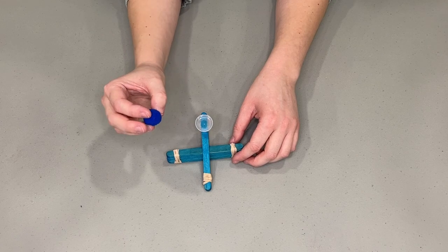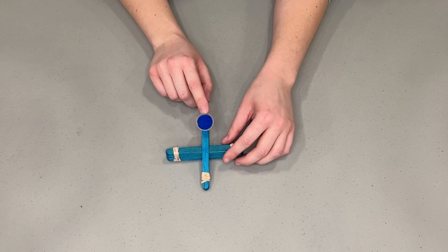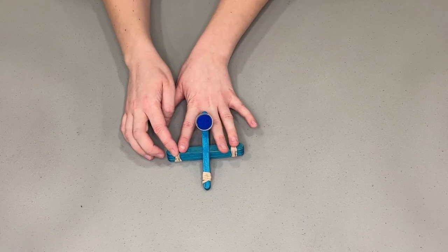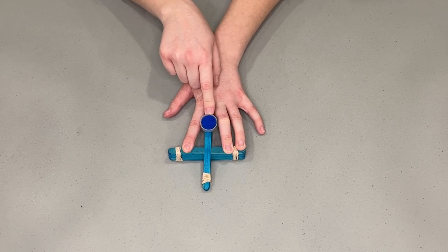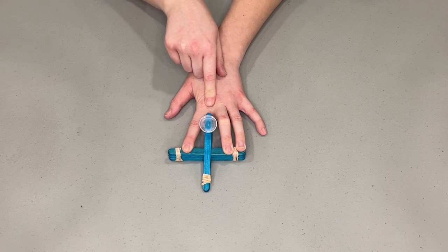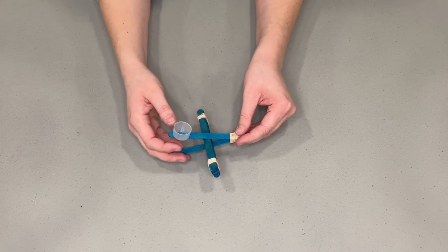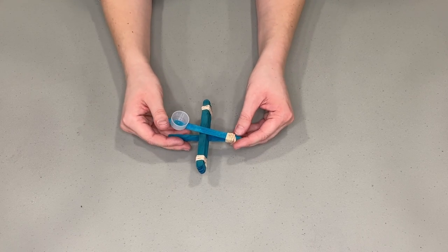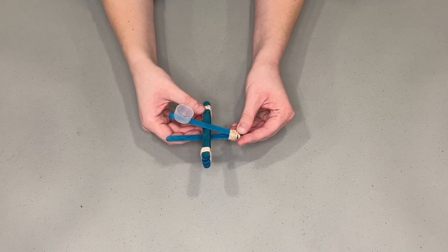So then you want to grab whatever little holder you're going to use and just hot glue that onto the end. You want to leave a little bit of space at the end of the popsicle stick there for you to put your finger on it for launching it. And I'll give you a little demonstration of this one. So I have a pom-pom and I'm going to put that in there. And then I hold on to it like this. And then once we're done building both we'll do a test to see which catapults goes further.